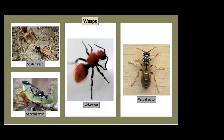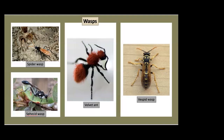Wasps can also be beneficial insects. The larvae of spider wasps are external parasites of spiders. Sphecid wasps include digger wasps, mud daubers, and sand wasps — both adult and larval stages are predaceous. Female velvet ants are wingless while males have wings; their larvae are external parasites of wasps, bees, beetles, and flies depending on the species. Vespid wasps include hornets, paper wasps, and yellow jackets — both adults and larvae are predaceous. A lot of people don't realize that.